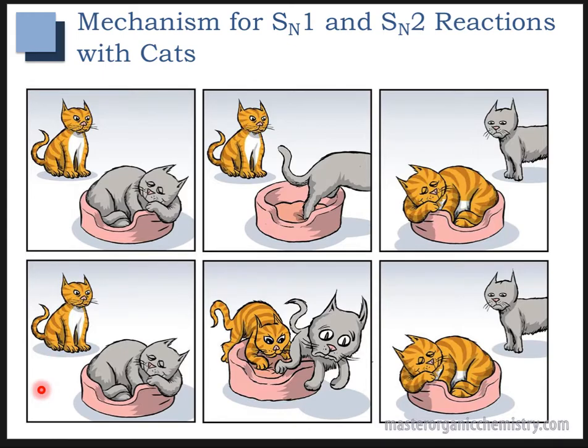If you're looking at the bottom example, though, this is more like an SN2 reaction, where gray cat's there, orange cat pushes gray cat out, and gray cat there looks a little bit horrified, and then orange cat ends up in the bed. In both cases, orange cat got the bed. It was just whether or not it waited for gray cat to leave first.